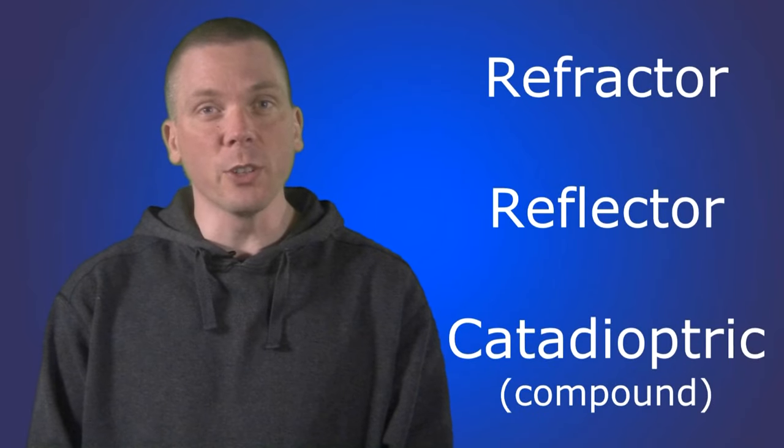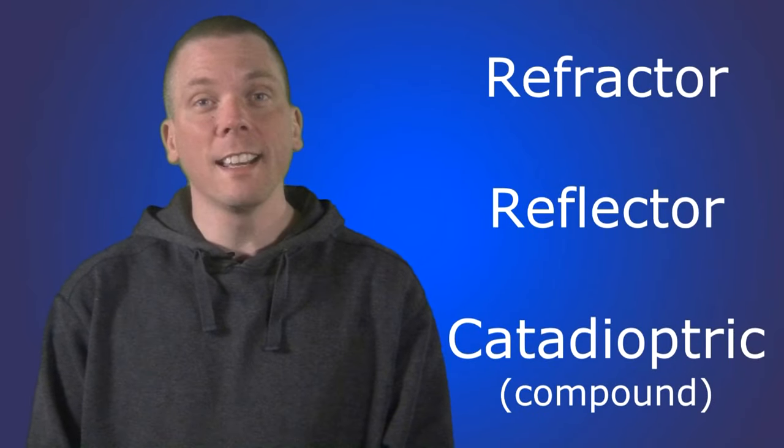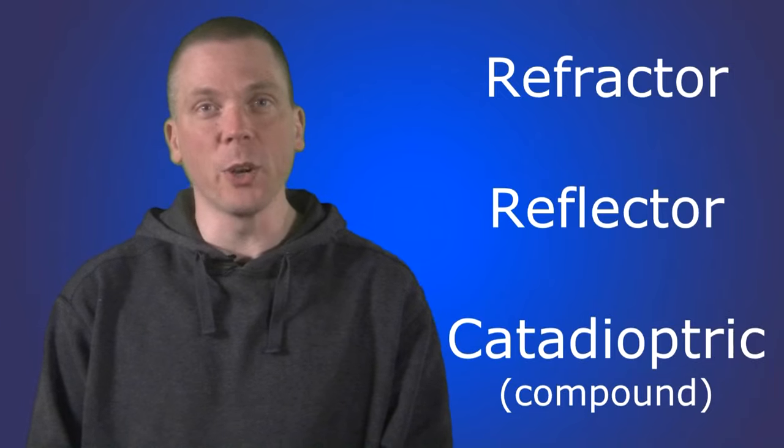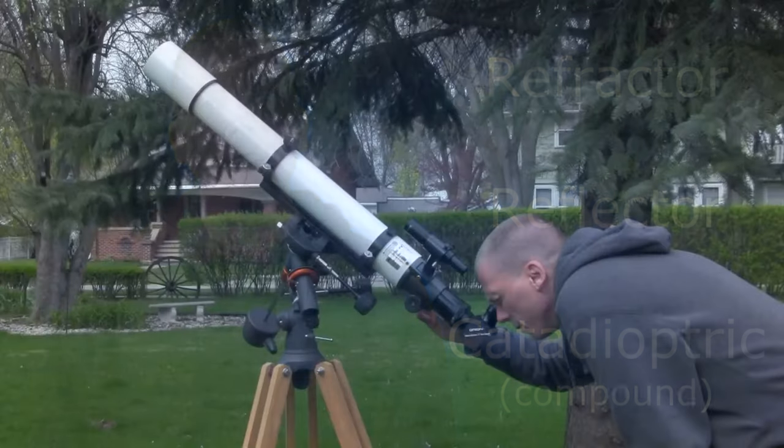First we will look at the three major types of amateur telescopes: refractors, reflectors, and compound or catadioptric telescopes.